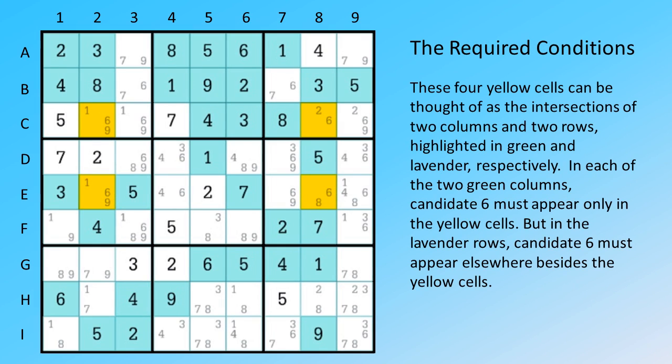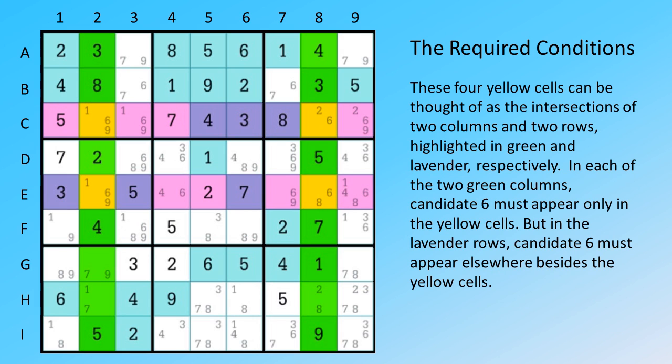These four yellow cells can be thought of as the intersections of two columns and two rows, highlighted in green and lavender, respectively.